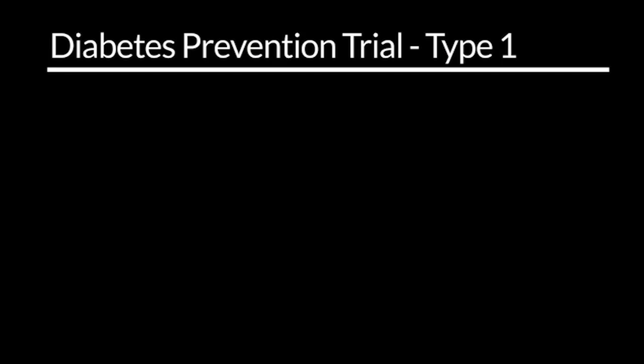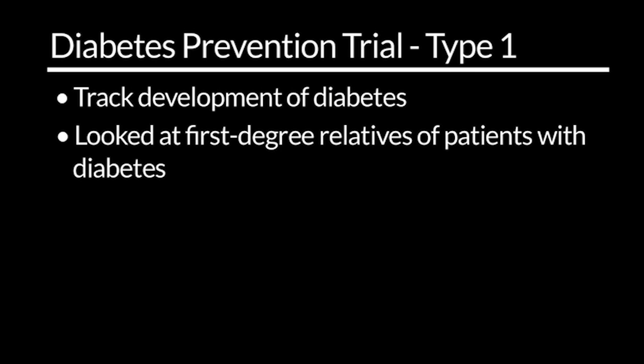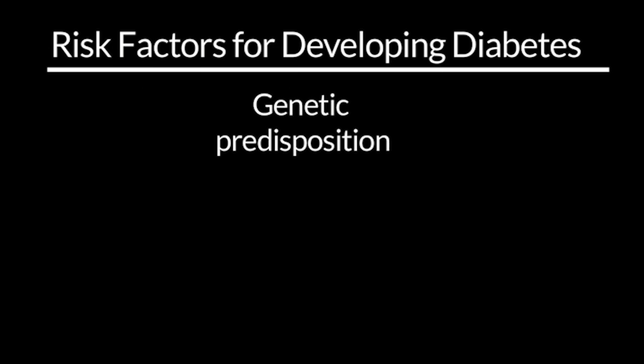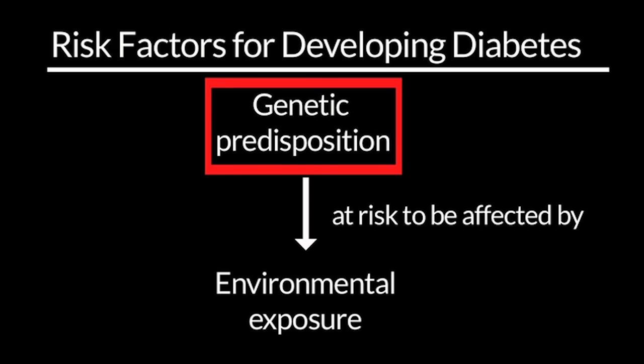I'll start by explaining how one gets diabetes to begin with, because it's a surprise to many that diabetes really develops over a period of many, many months. When endocrinologists in Boston set up the Diabetes Prevention Trial, or DPT-1, several years ago, although we weren't able to stop the onset of diabetes, we were able to track people getting diabetes. We know that patients who are about to get diabetes have a genetic predisposition, and then they have some environmental component that occurs at some point in their life. We don't understand what that environmental component is, but we understand that if you have that genetic predisposition, you are at risk to be affected by the environmental exposure.